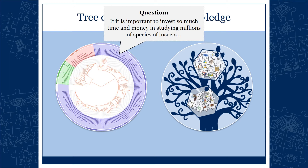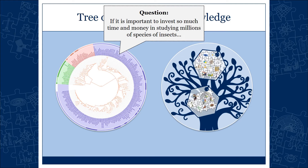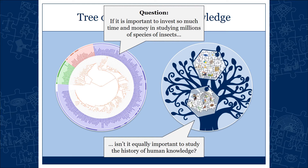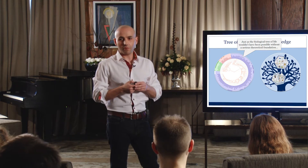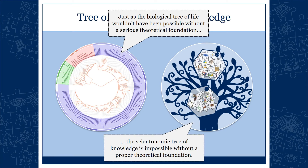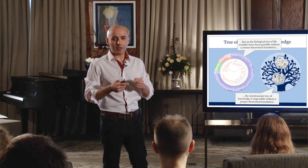So my question is: if we believe it is important to invest millions of dollars, time, effort, and energy in reconstructing the features of all minute species — millions of types of insects, thousands of types of cockroaches — and that is extremely important, isn't it equally important to invest time and energy in reconstructing the history of human knowledge? Just as the biological tree of life wouldn't have been possible without a serious theoretical foundation — you can't have a tree of life without evolutionary theory — the scientonomic tree of knowledge is also impossible without a proper theoretical foundation.